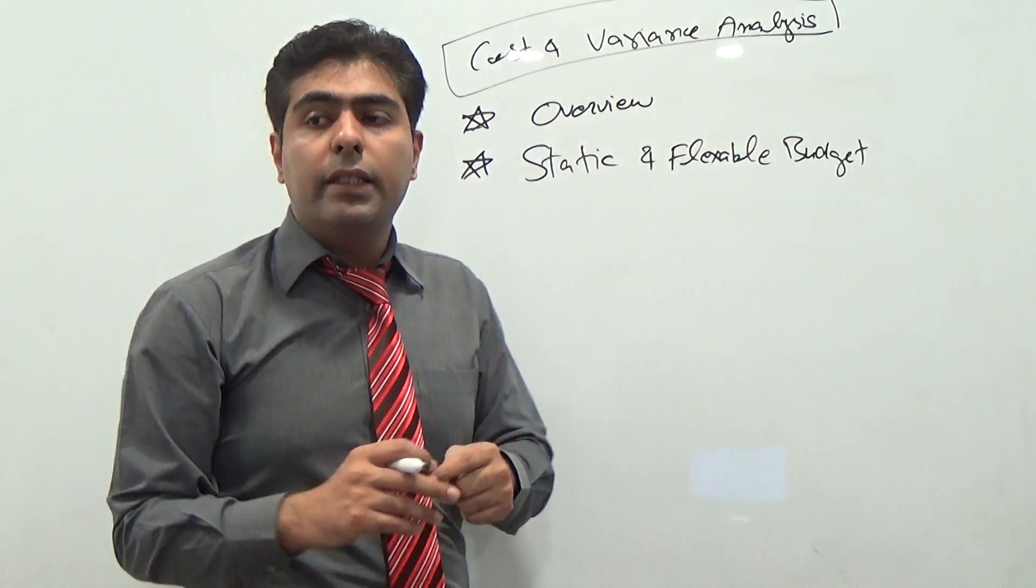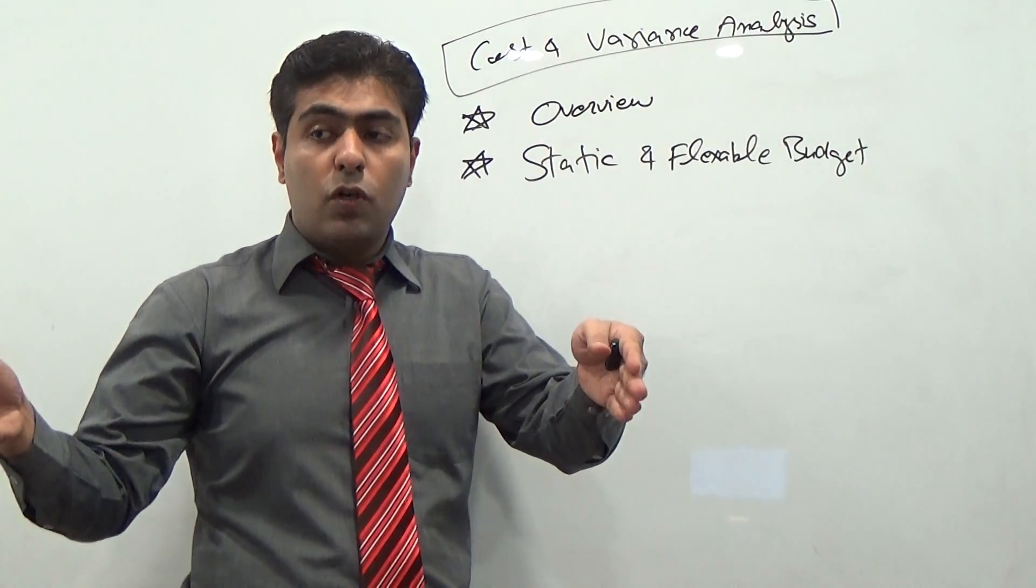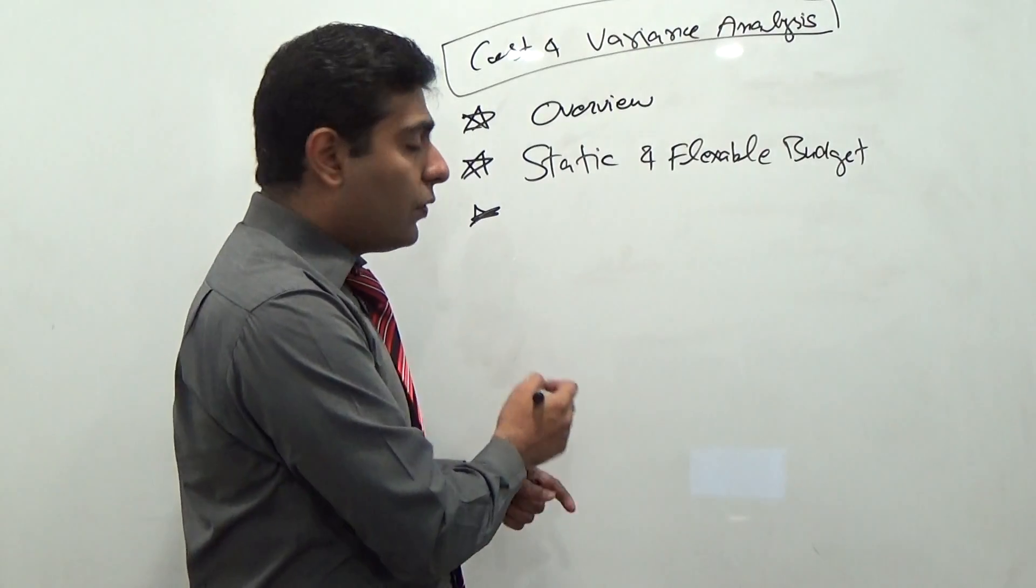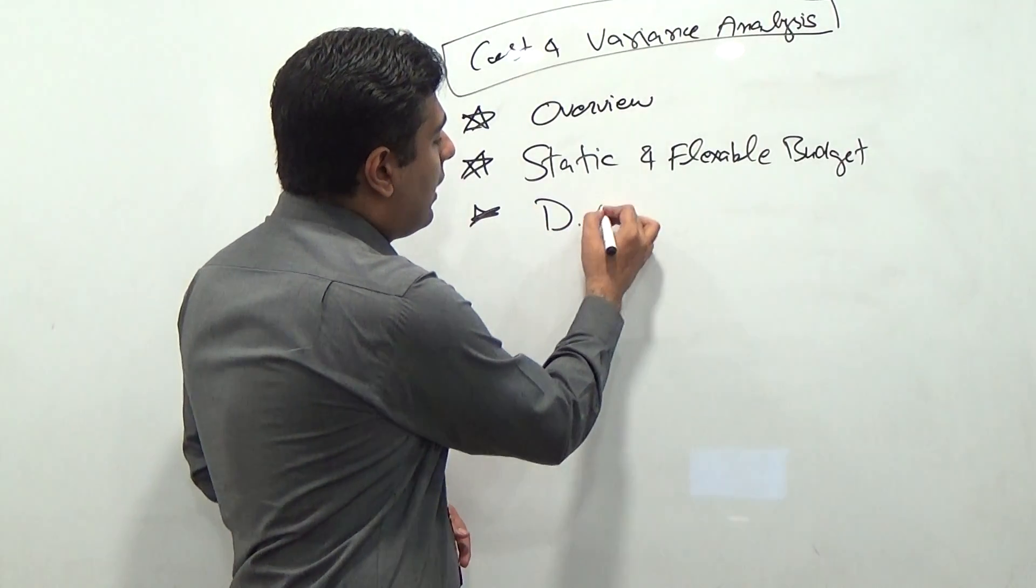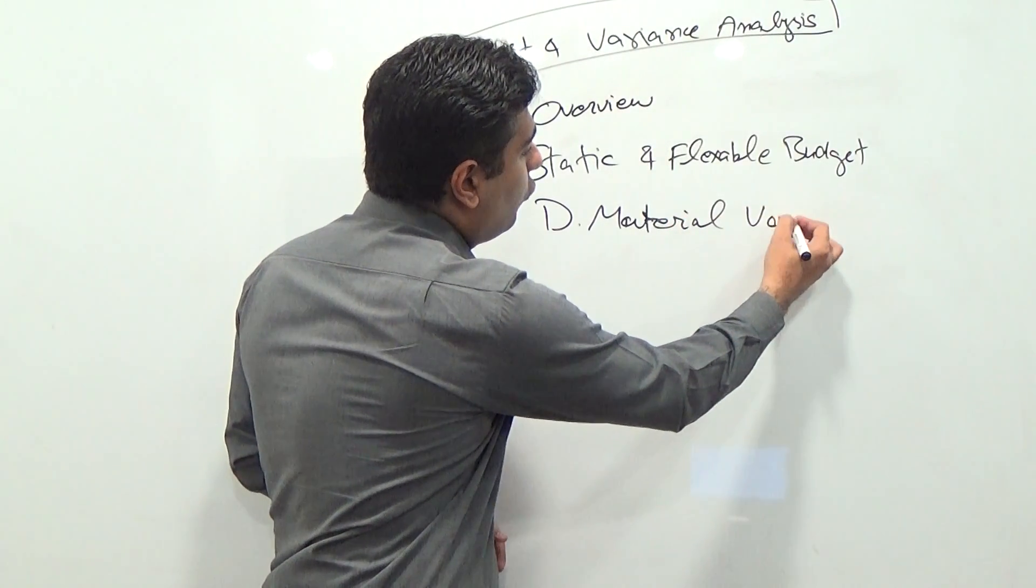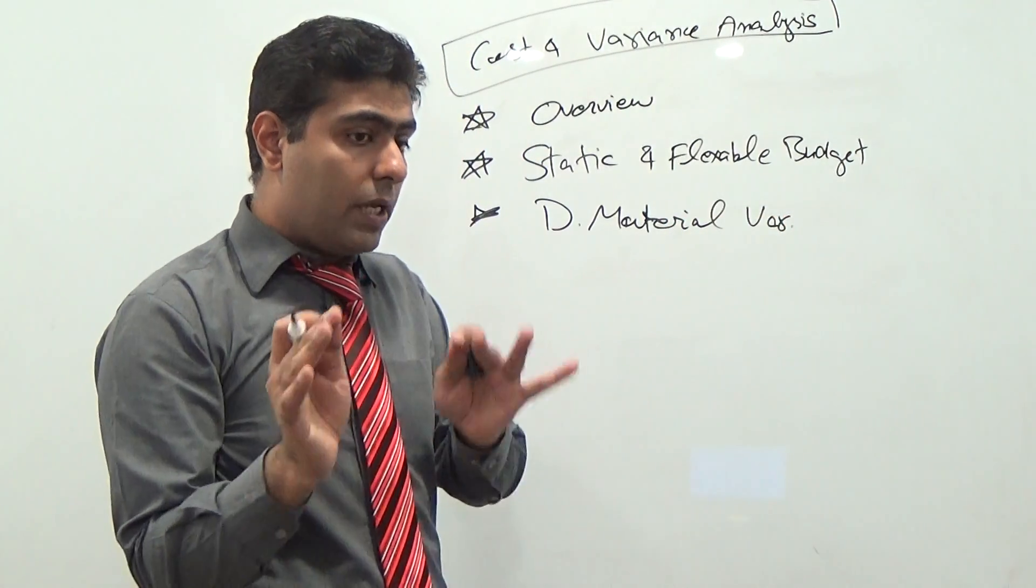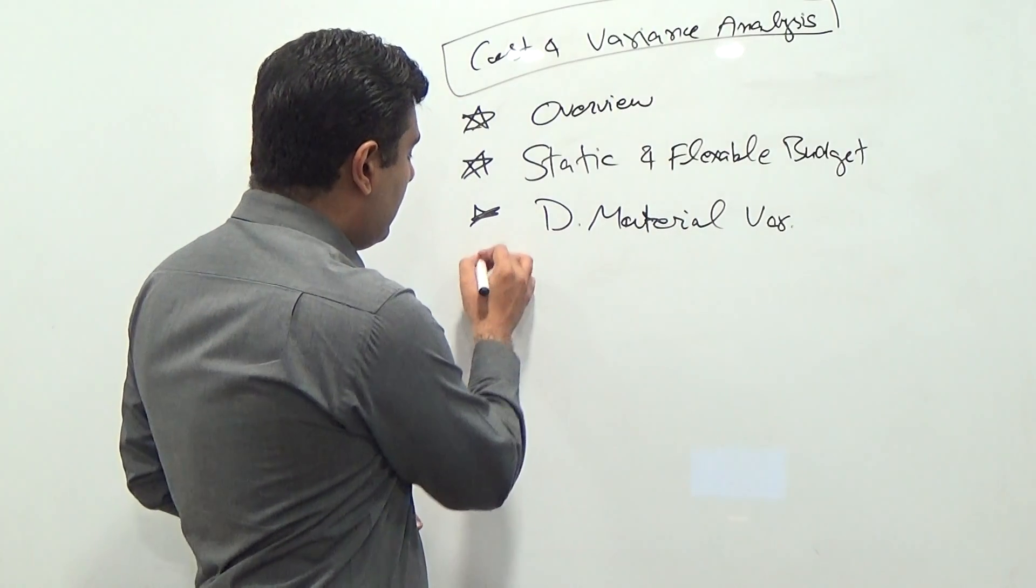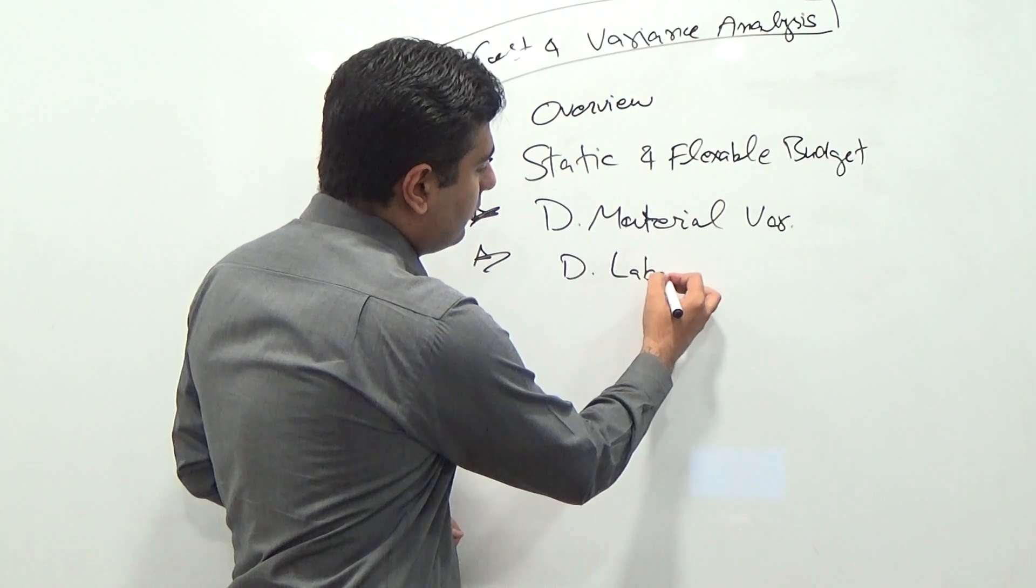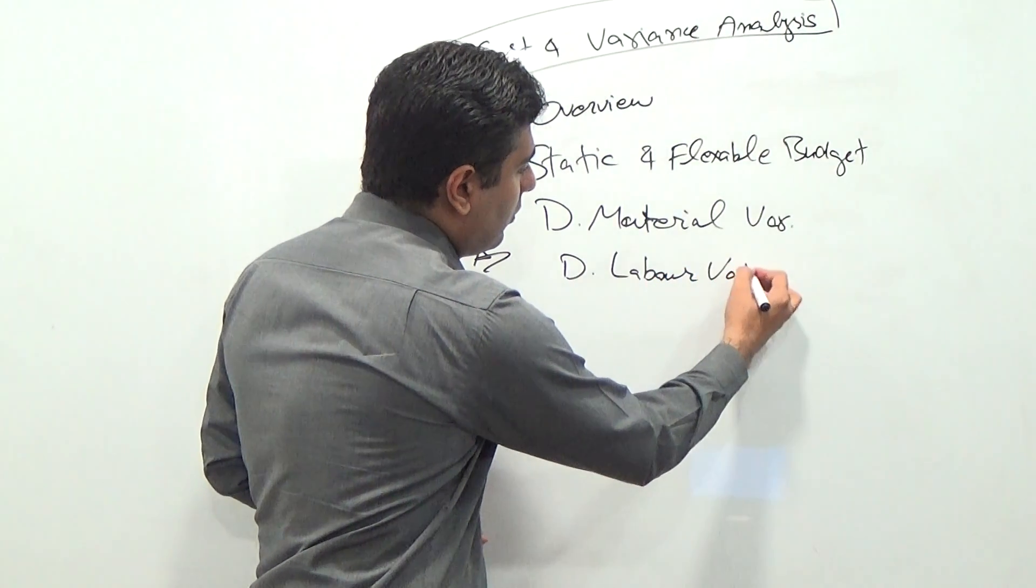Now let me tell you guys that there are many different types of variances. The first type of variance which I will discuss in front of you is called direct material variance. After that I will discuss with you direct labor variance.